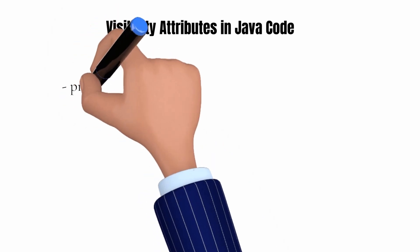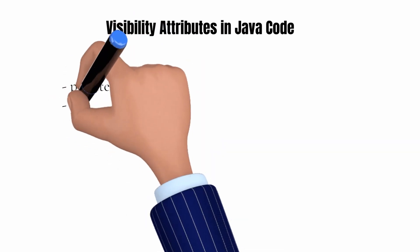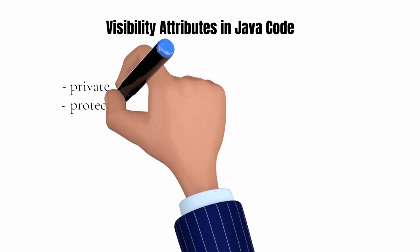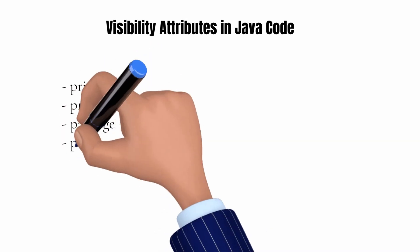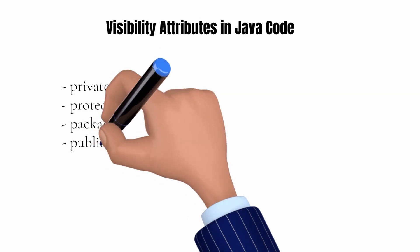A class file can have visibility attributes on the class definition, on a method, or on a property. Those visibility attributes can be private, protected, package scope, or public. If a class is marked public, it can be used by any other class anywhere. If a class is marked protected, it can only be used by subclasses — classes that extend it. If a class is marked as package scoped, it can only be used by other classes in the exact same package — that package may be defined in multiple jars, and those jars could share code, so it just has to be in the same package regardless of which jar. If a class is marked as private, it can only be used by other classes in the same class file.